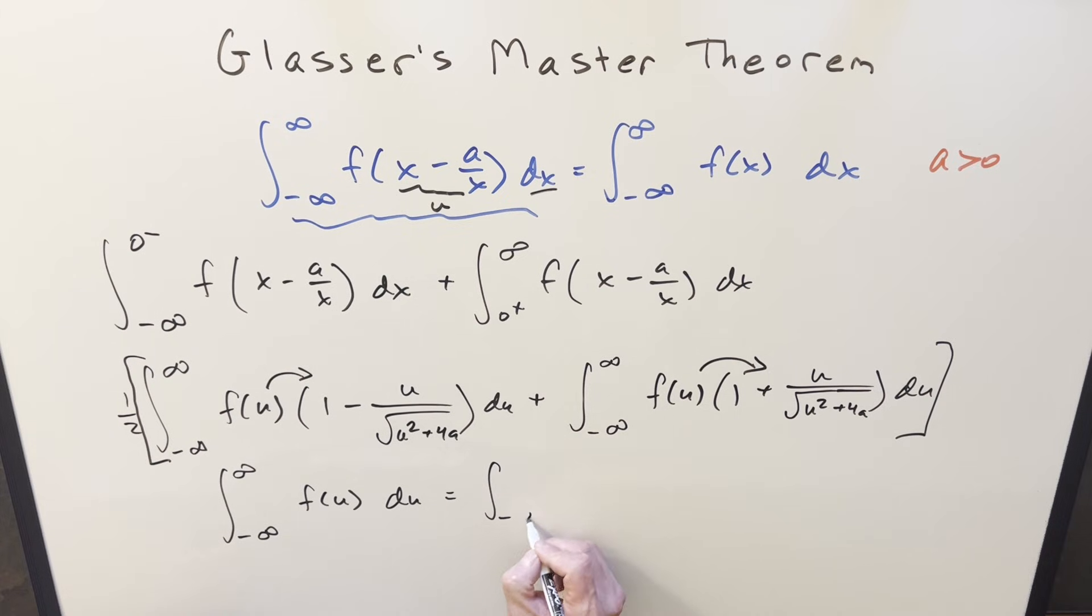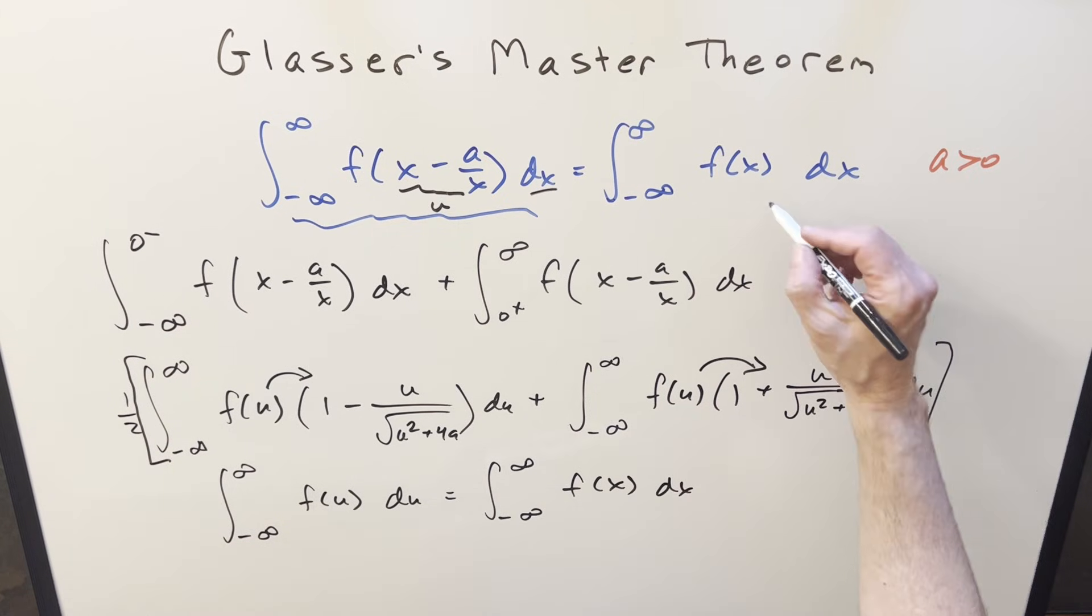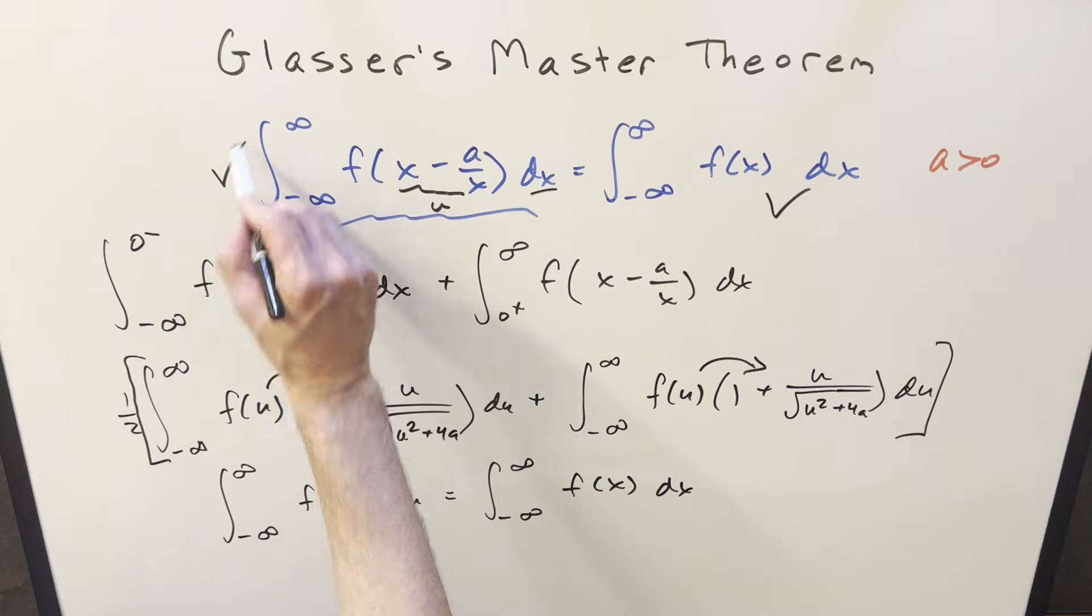And so the whole thing just simplifies down to just f of u. Of course, I can do a variable change on this for a definite integral, so I'll just write it as f of x dx. But this is the exact same thing as this. And so we've shown that this formula is going to work.